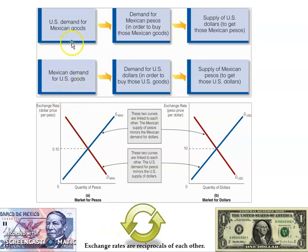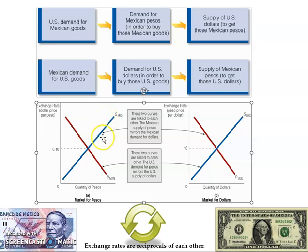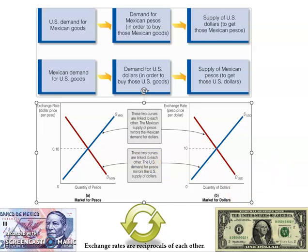Similarly, if there is Mexican demand for U.S. goods, this creates a demand for dollars. For those Mexicans to get dollars, they have to supply pesos. So the supply curve in the peso market is connected to the demand curve for dollars. Mexicans supply pesos to demand dollars to go shopping in America.